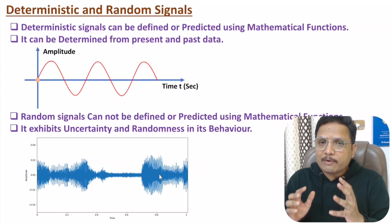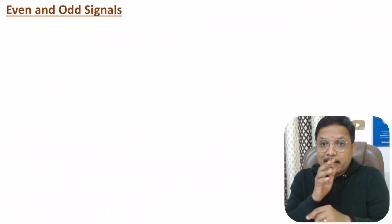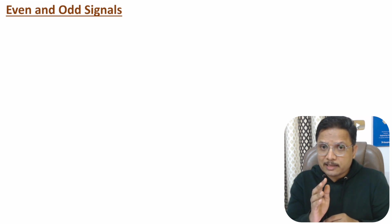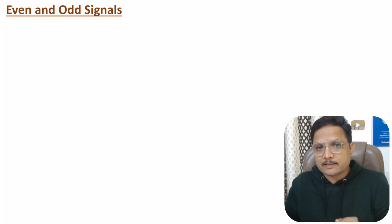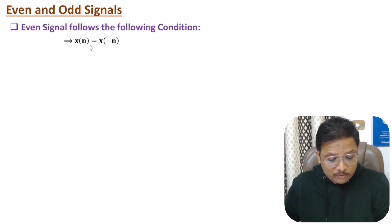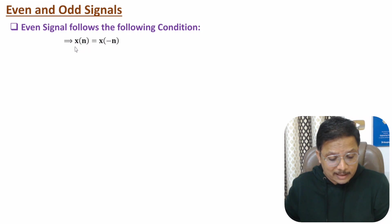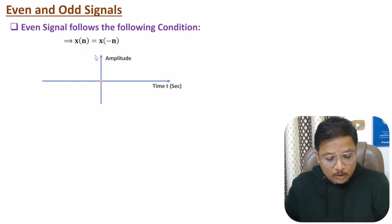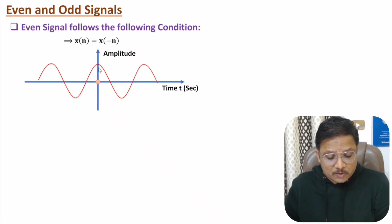Now I will explain even and odd signals. If you flip the signal and it equals the actual signal, then the given signal is an even signal. The condition is x(n) = x(−n). So if you flip the signal to get x(−n) and it equals the original signal, it is an even signal. For example, the cosine signal — after a flip, it remains the actual signal.